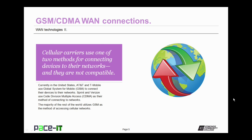All cellular carriers use one of two methods for connecting devices to their networks, and those methods are not compatible. Currently in the United States, AT&T and T-Mobile use the Global System for Mobile, or GSM standard, to connect their devices to their networks. Both Sprint and Verizon use Code Division Multiple Access, also known as CDMA, as their method of connecting to networks, and those two standards are not compatible. The majority of the rest of the world utilizes GSM as the method for cellular network access.